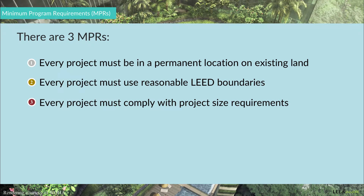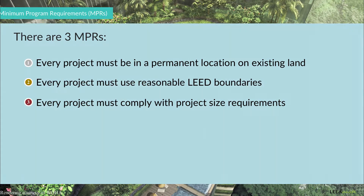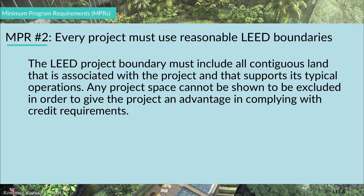MPR number two: projects must use reasonable LEED boundaries. The LEED project boundary must include all contiguous land that is associated with the project and supports its typical operations. These will include the landscaping, septic or stormwater treatment equipment, parking, sidewalks, and even more. Any project space cannot be shown excluded in order to give the project an advantage in complying with credit requirements.